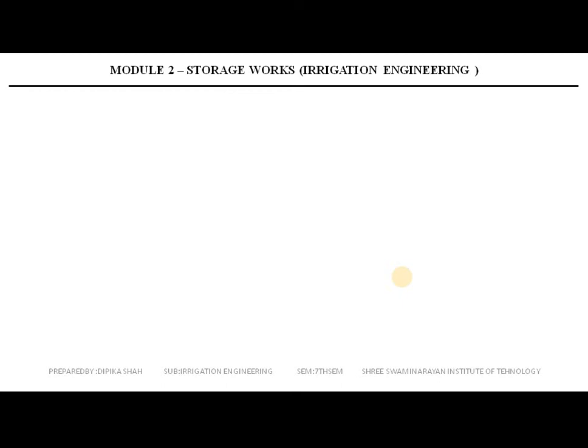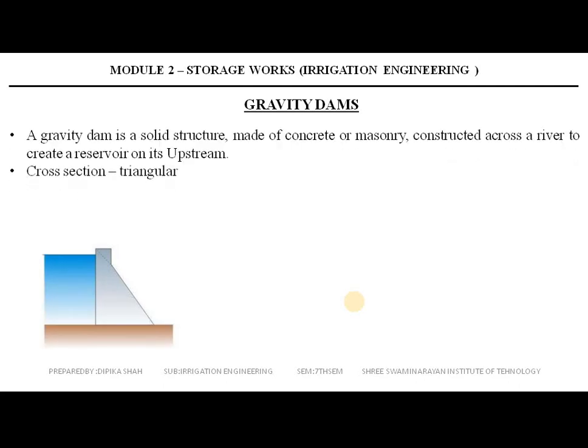Now we will study about the gravity dam. A gravity dam is a solid structure made of concrete or masonry, constructed across a river to create a reservoir on the upstream side. A gravity dam is one in which external forces such as water pressure, wave pressure, silt pressure, uplift pressure, etc. are resisted by the weight of the dam itself. The stability of the gravity dam depends on its weight.